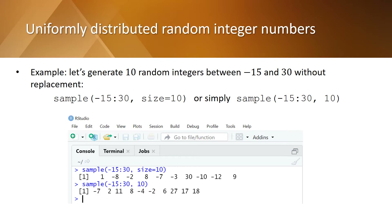You can even write the command more simply by just giving the information on the population and on the sample size. The print screen of RStudio shows the output of the two commands and you get each time 10 random integers.